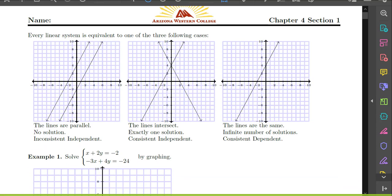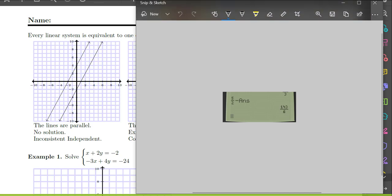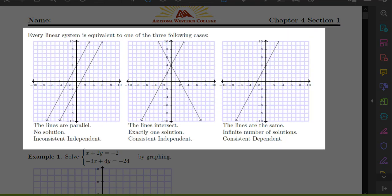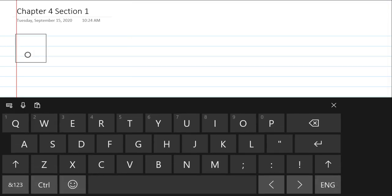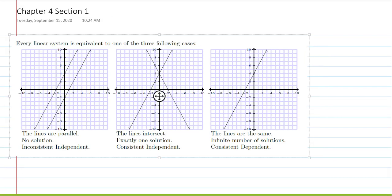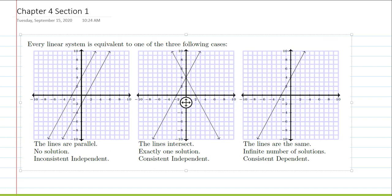Chapter 4, Section 1 is about systems of linear equations in two dimensions — two equations and two unknowns. We start here because it's the easiest place to visualize what's happening. We'll need to abstract beyond two dimensions, since many business application problems have many variables, but the rules don't change when the number of dimensions changes.